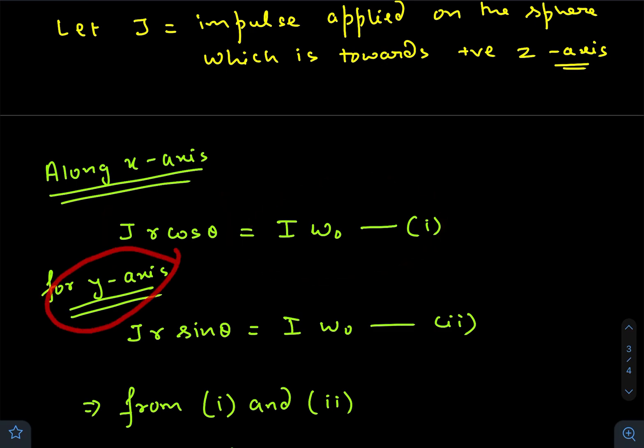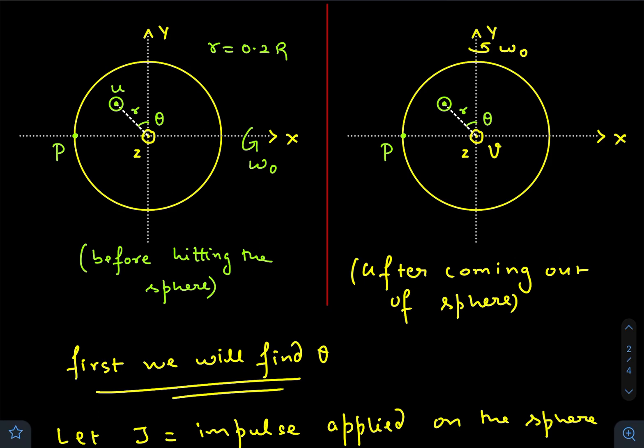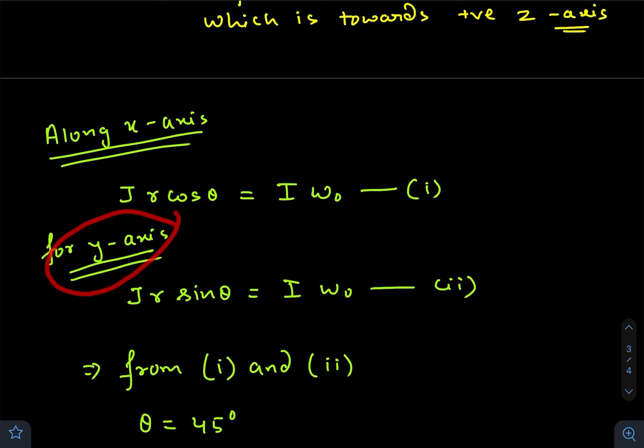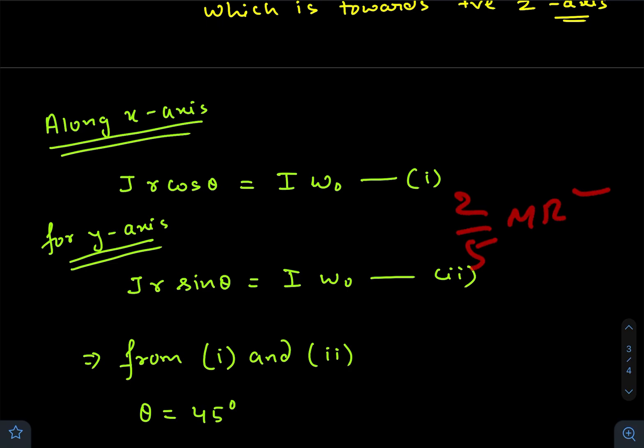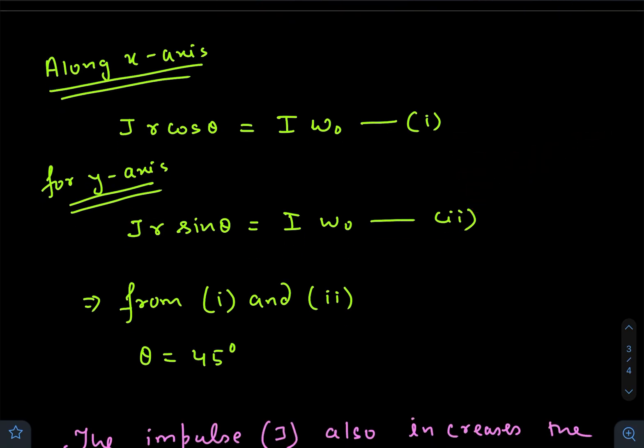Similarly for the y-axis, the perpendicular distance is r sin θ. So J times r sin θ equals final angular momentum minus initial angular momentum, where I is the moment of inertia of the solid sphere, which we will take as (2/5)MR². To find θ, we solve equations 1 and 2. We get 45 degrees - just divide these two equations.